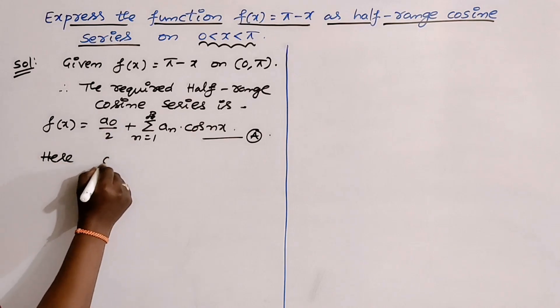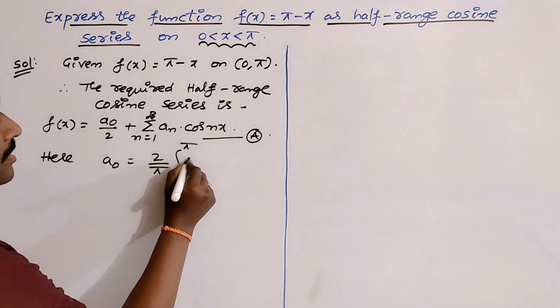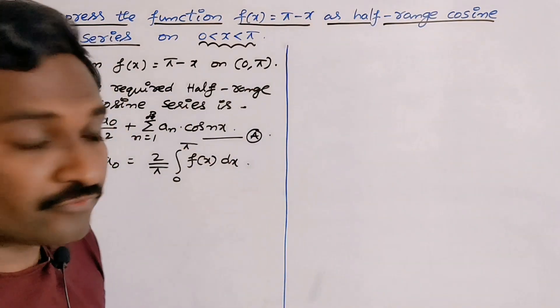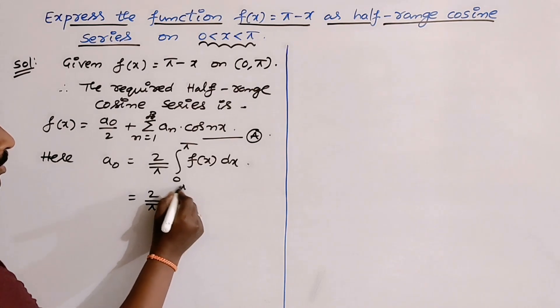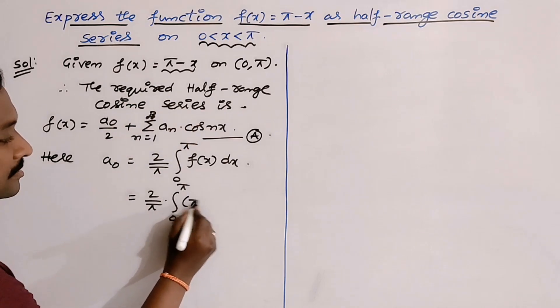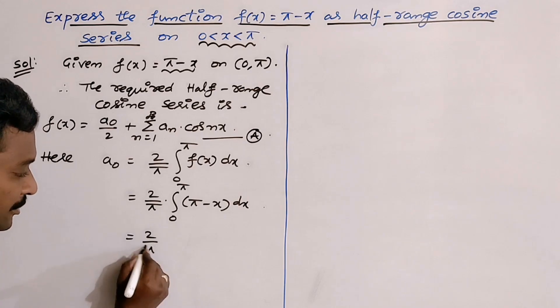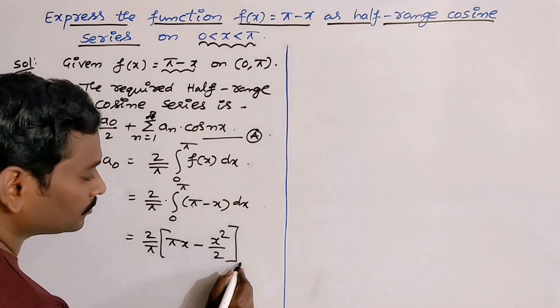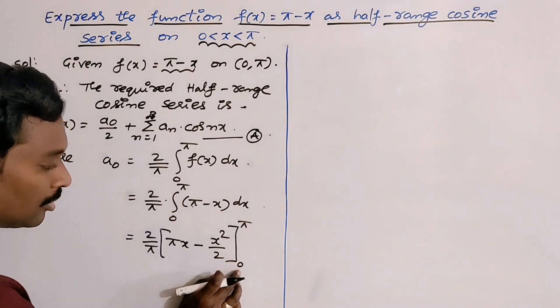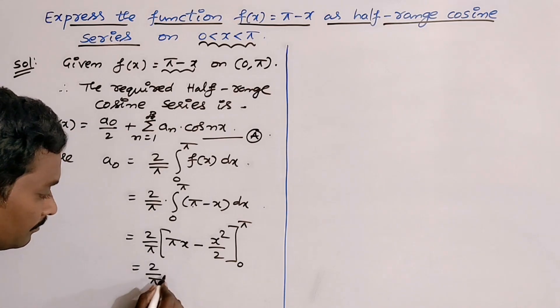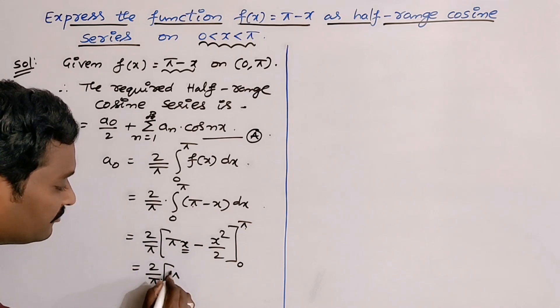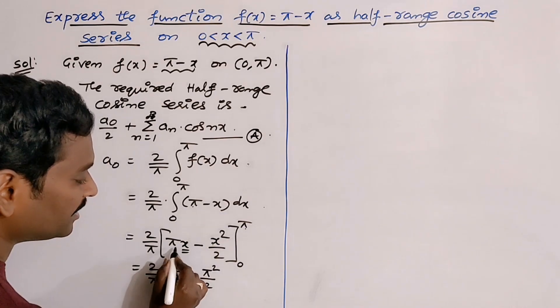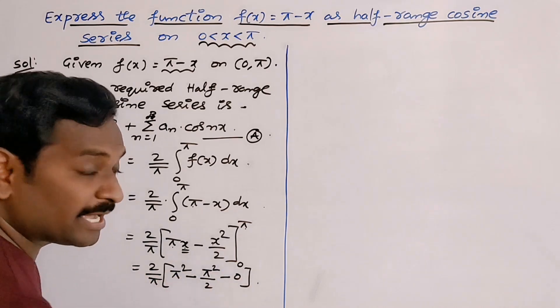Here, what is the formula for a₀? 2/π ∫₀^π f(x)dx. This is the formula for a₀ in the concept of half-range cosine series. Don't forget it. So, 2/π ∫₀^π (π - x)dx. So, 2/π times [πx - x²/2] evaluated from 0 to π. Integration is completed. That's why we have to apply limits. Lower limit is 0, upper limit is π. 2/π times (π² - π²/2). By applying lower limit, π times 0 is 0, 0 by 2 is 0. So every term becomes 0 by replacing lower limit 0.